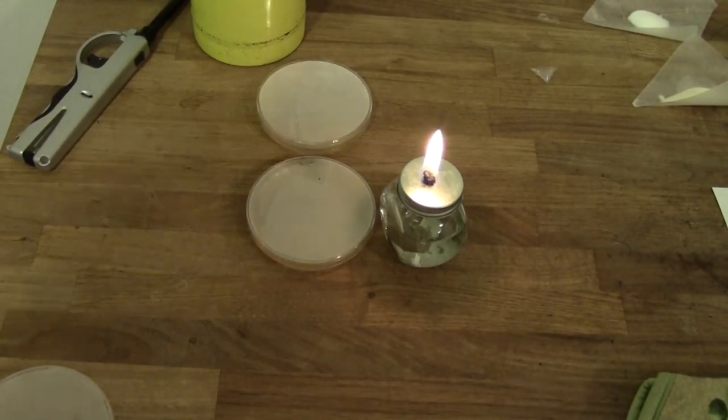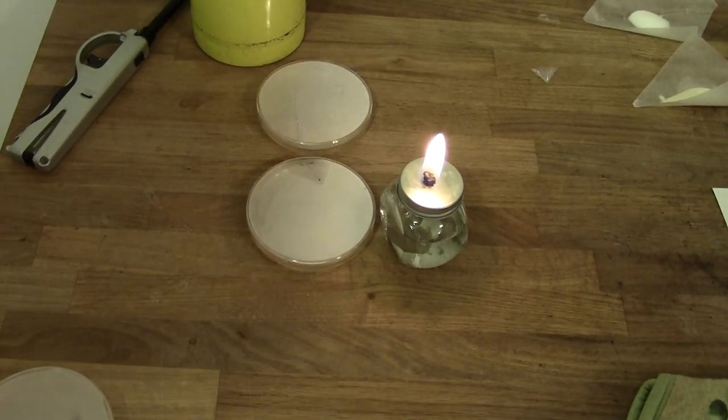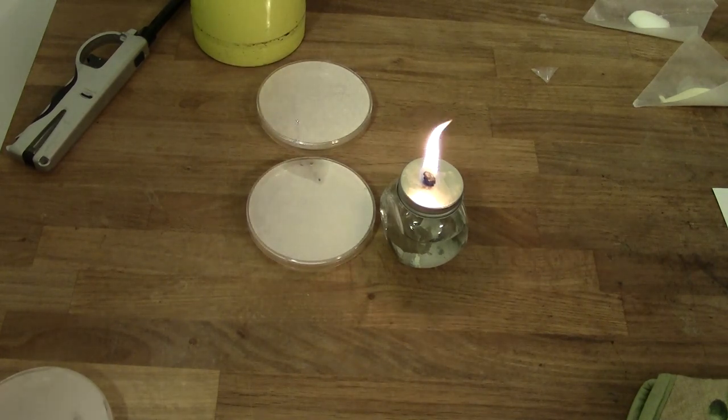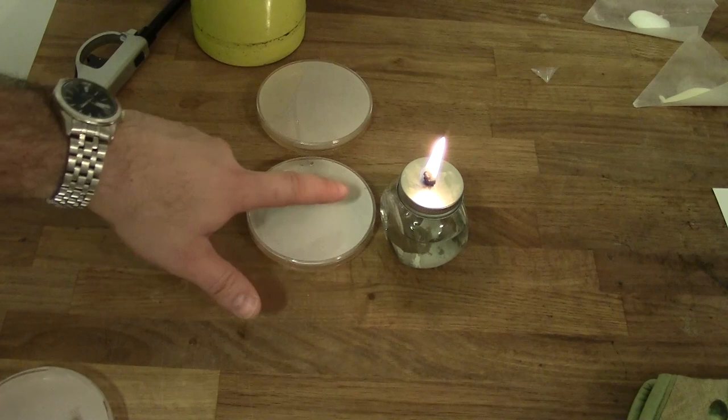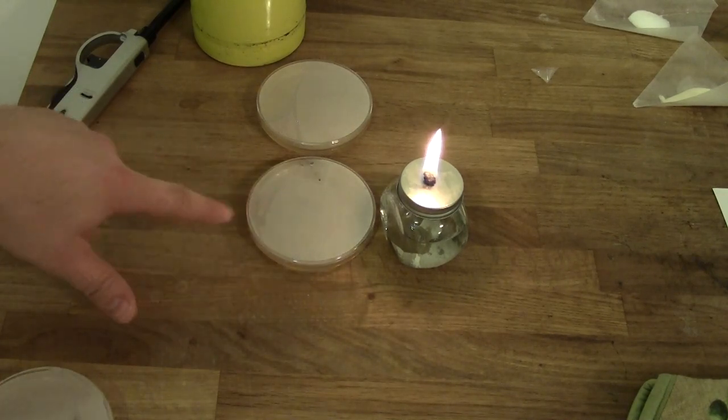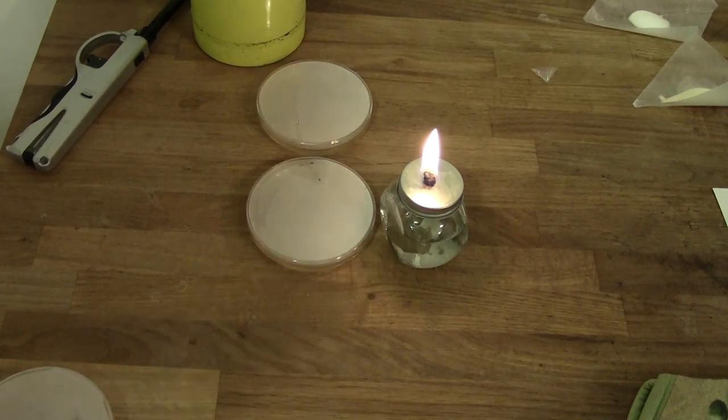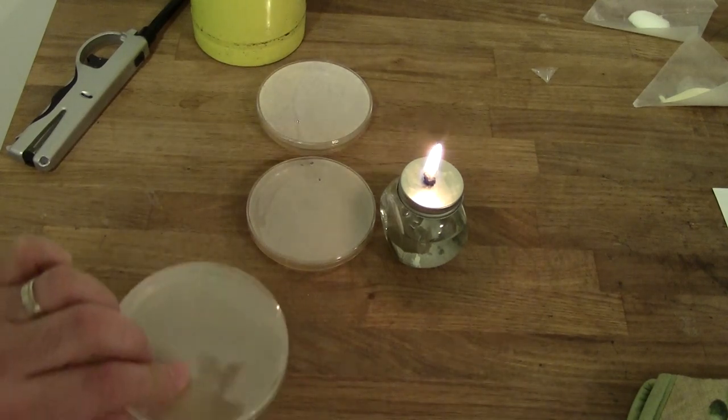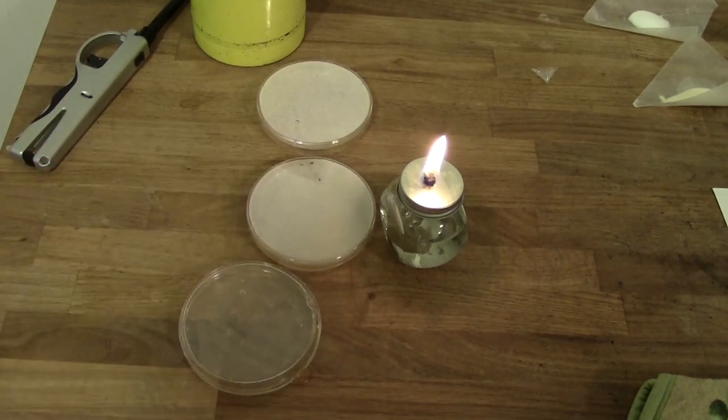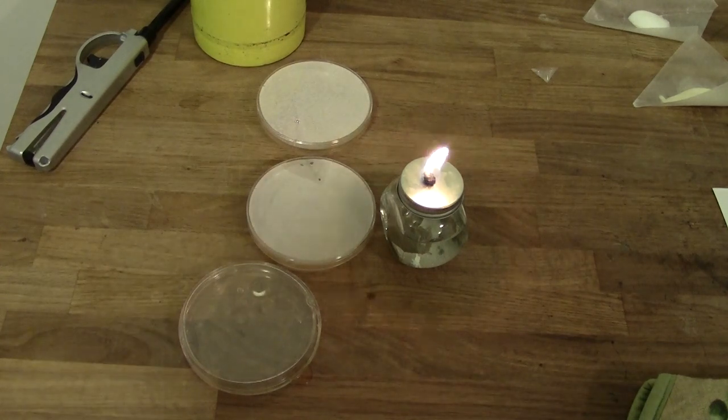So once you've done pouring your plates, you just want to let them sit on the counter for about 20 minutes until the gel solidifies. At which point you want to immediately flip them over, because as you can see, there's a fair amount of condensation on the lid. And if we were to just leave this, this would drop on the plate and ruin it. So after about 20 minutes, the gel will be hard enough that you can flip it. Now obviously it's quite important you don't do this too early, and again I'll show you this with my sacrificial plate. But yeah, if we flip them too early, as you can see, it just spills out everywhere and makes a mess.